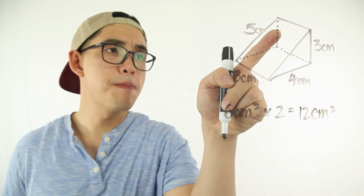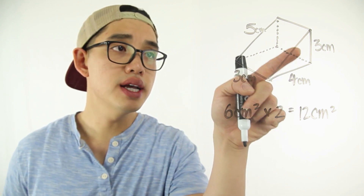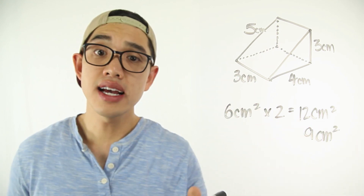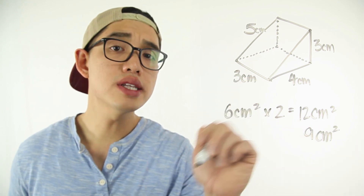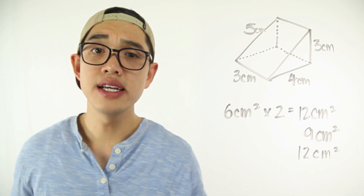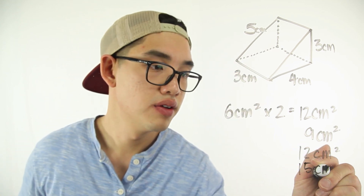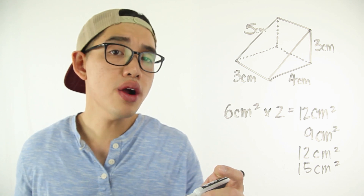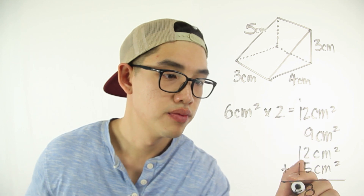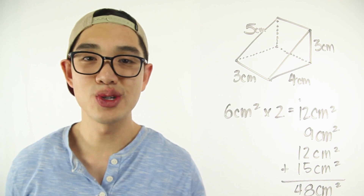Now I'm going to figure out this back piece right here. Since the height is three and this length is three, three times three is going to give me nine. So this back piece is nine centimeters squared. Next, I have this floor piece right here — three times four gives me 12 centimeters squared. And last but not least, I have the slanted side right here — three times five gives me 15 centimeters squared. Now we can add up all of the areas and figure out the entire surface area of this triangular prism. Our surface area is going to be 48 centimeters squared.